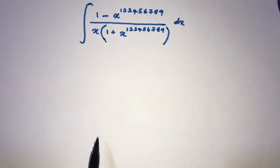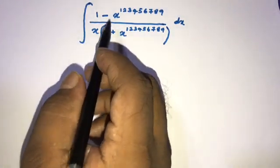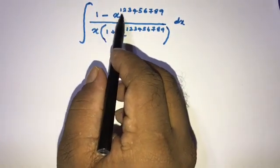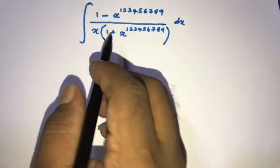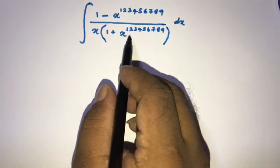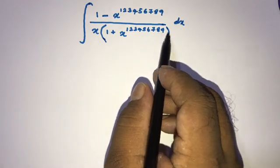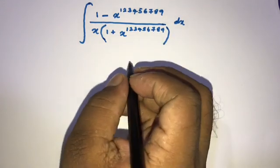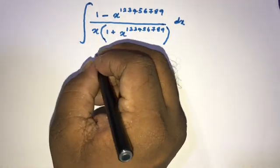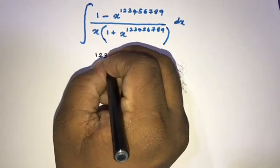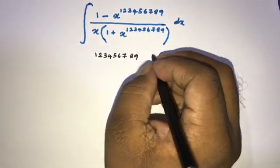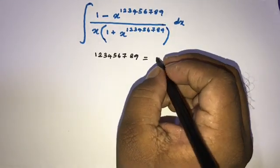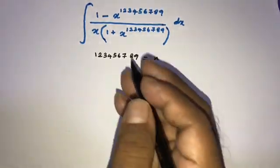Hi, welcome to the Mathematics channel. Today we are going to solve another indefinite integral. The question is the integral of (1 minus x^(1/9)) over x times (1 plus x^(1/9)). I am going to take 1/9 as equal to n, because it is continuously flowing down.